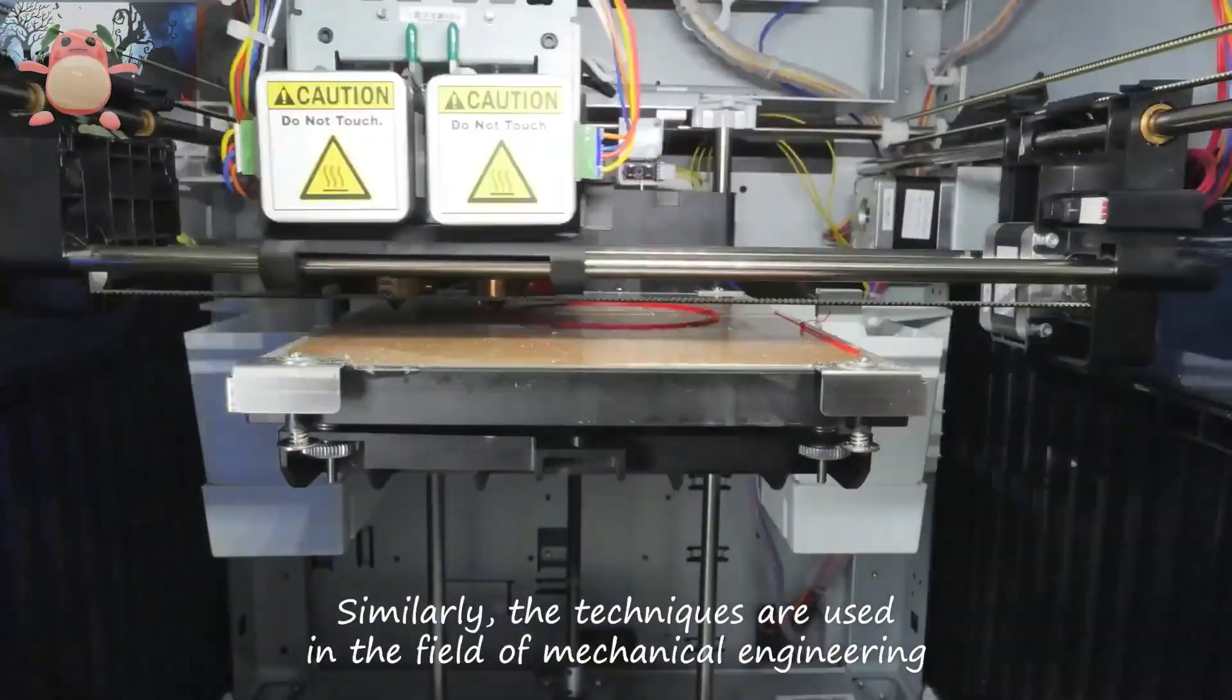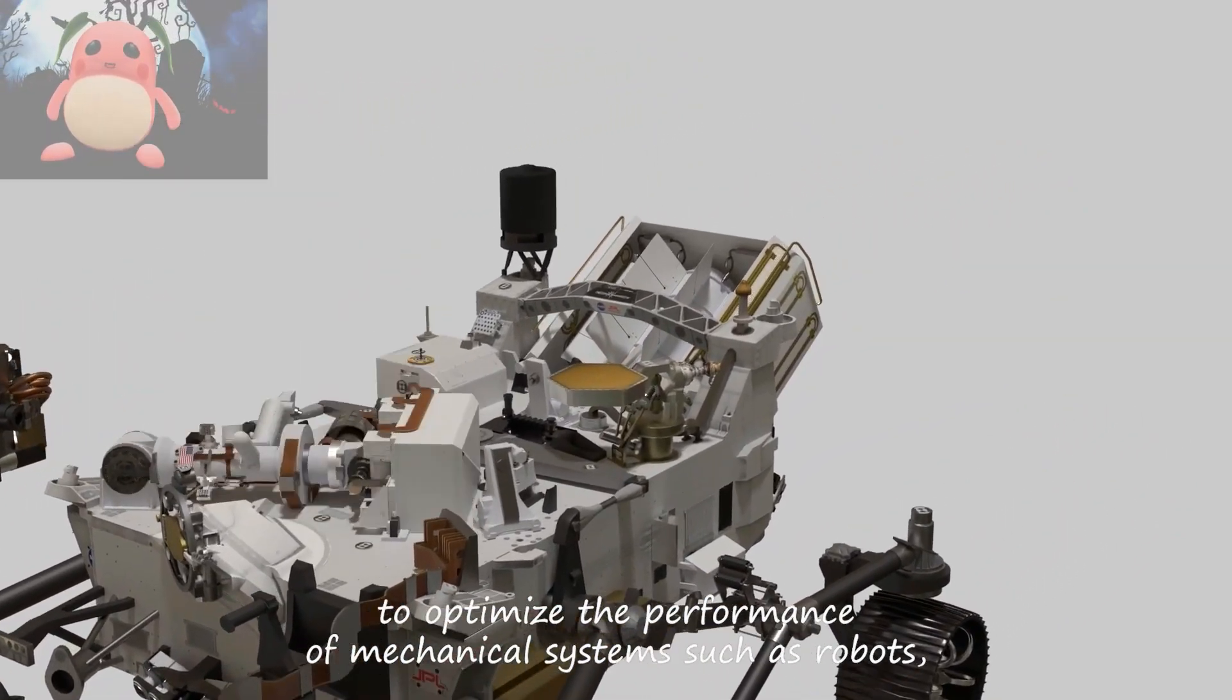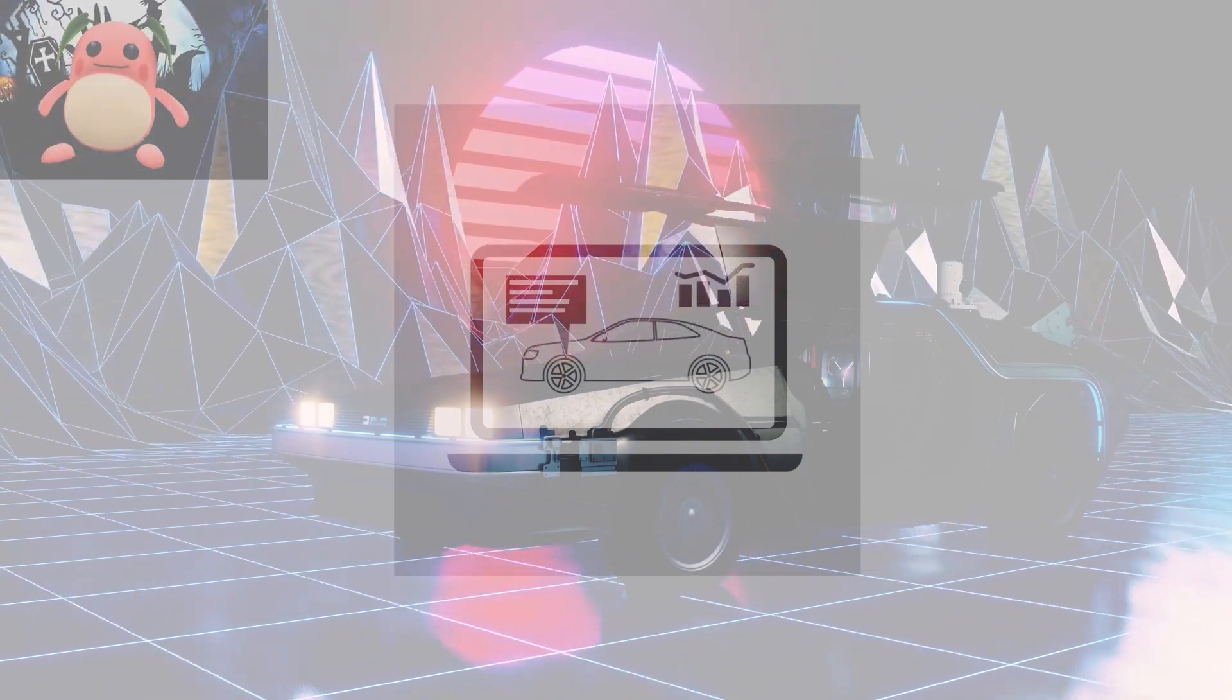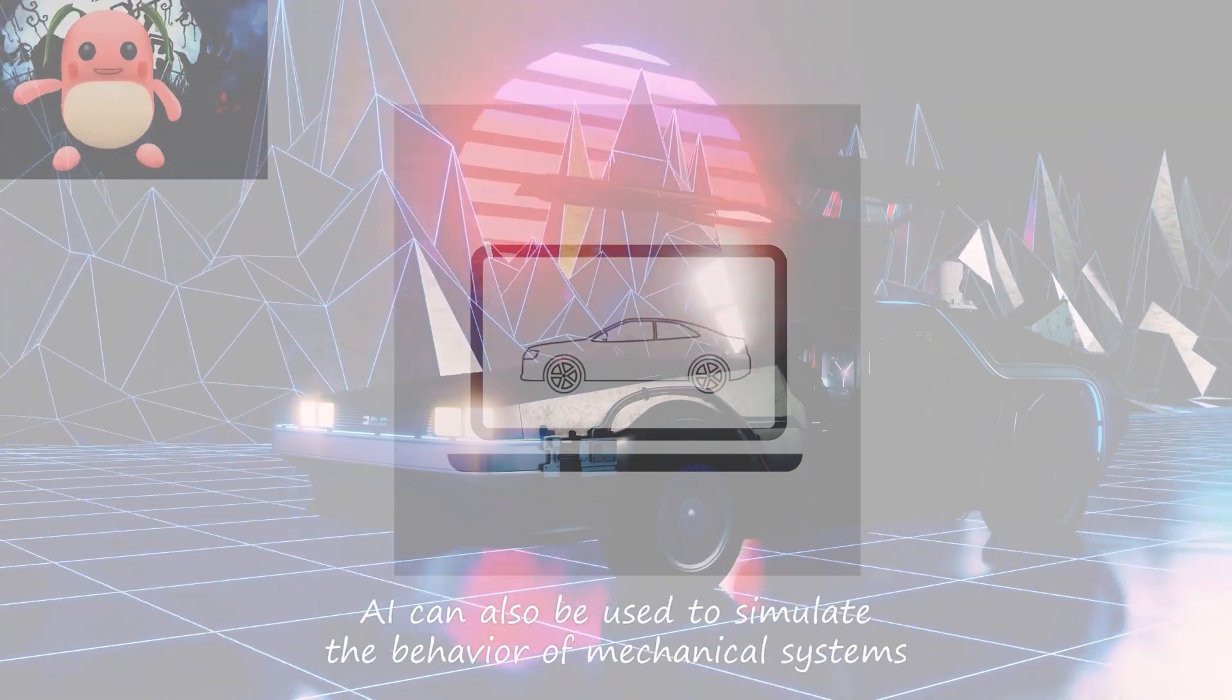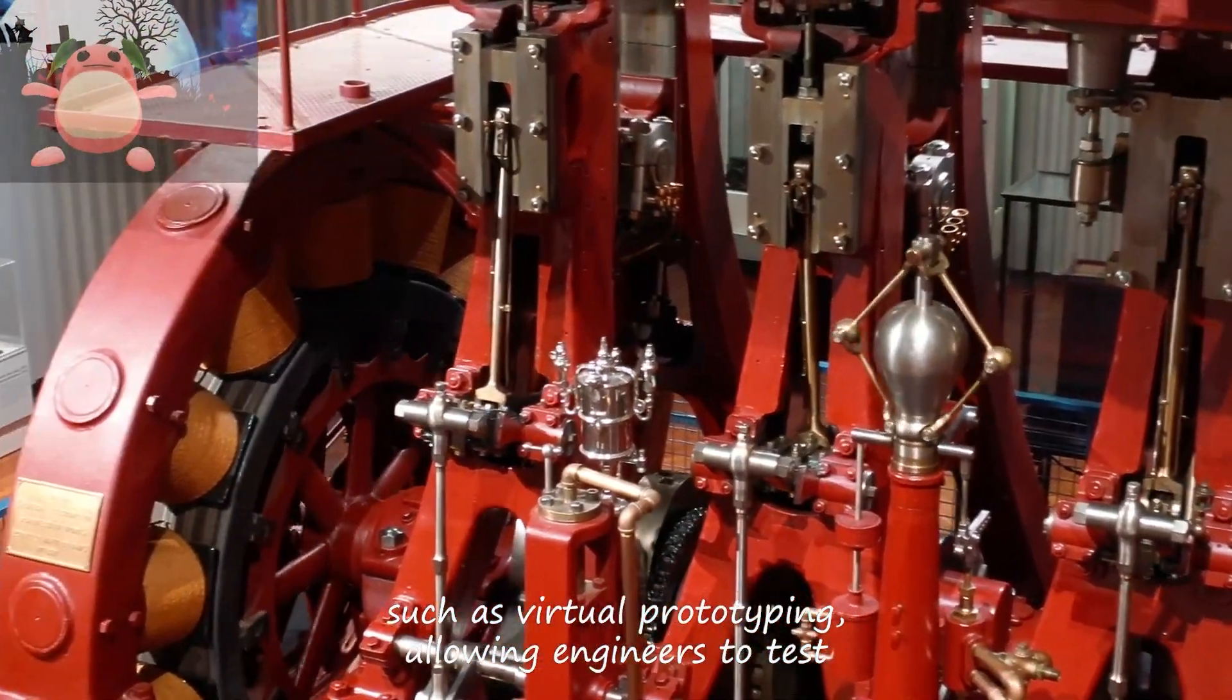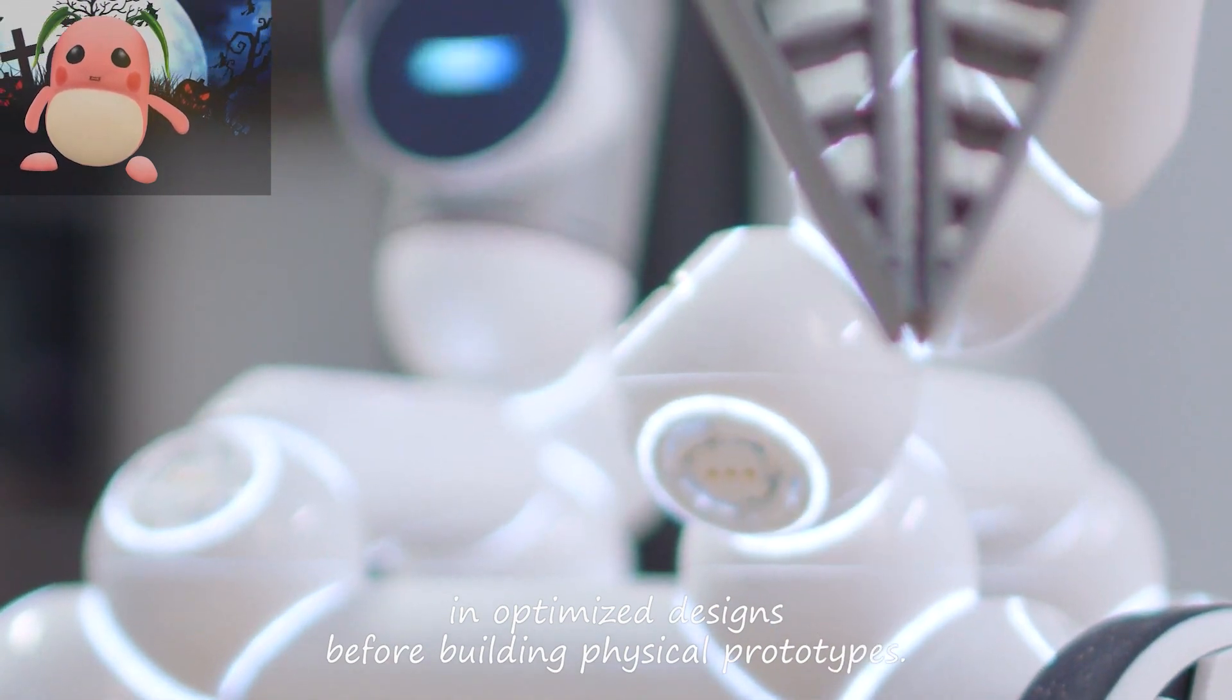Similarly, AI techniques are used in the field of mechanical engineering to optimize the performance of mechanical systems such as robots, self-driving cars, and industrial equipment. AI can also be used to simulate the behavior of mechanical systems such as in virtual prototyping, allowing engineers to test and optimize designs before building physical prototypes.